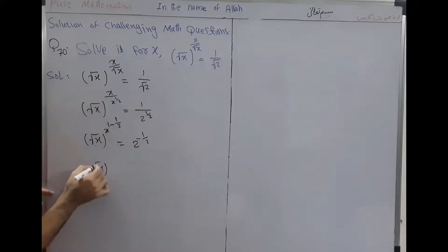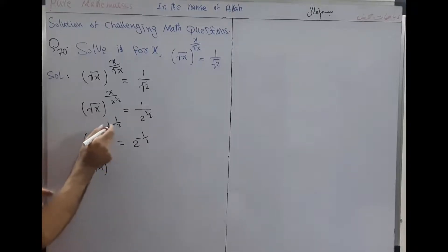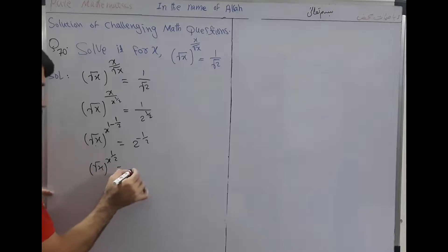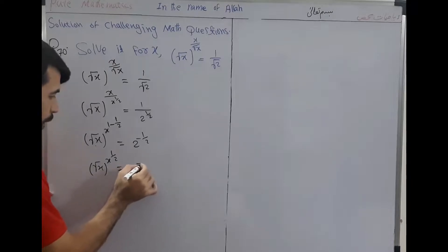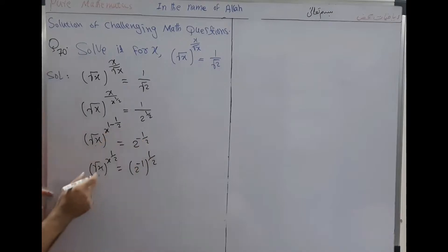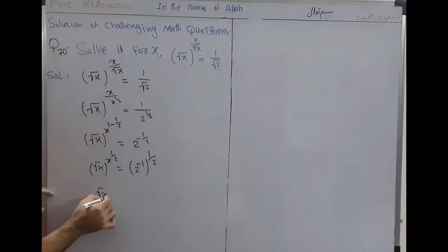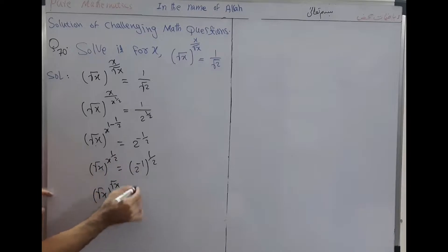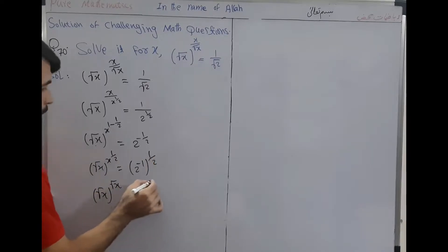We get x to the power (1 over 1/2), which equals 2 to the power (−1) whole to the power (1/2). This can be rewritten as x squared, whole to the power (square root of x), whole to the power (square root of x), equal to (1/2) to the power (1/2).